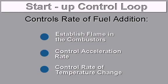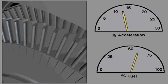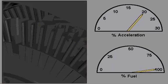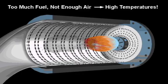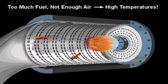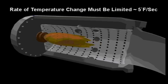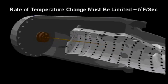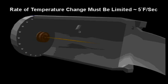The start-up control loop controls the rate of fuel addition for several reasons: to establish flame in the combustors, to control the acceleration rate, and to control the rate of temperature change. Acceleration of the turbine rotor must be controlled so as not to exceed the allowable forces on the rotor, as exceeding the limit can cause heavy damage. During start-up, the airflow rates are low. If there is too much fuel added to the combustors while there isn't enough air, temperatures could get dangerously high, potentially damaging internal hardware. High fluctuations in temperature can reduce the life of the internal hardware, and since different materials heat at different rates, the rate of temperature change must be limited to approximately 5 degrees per second.